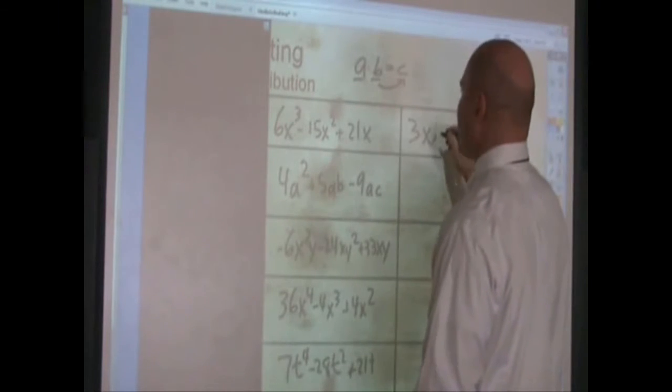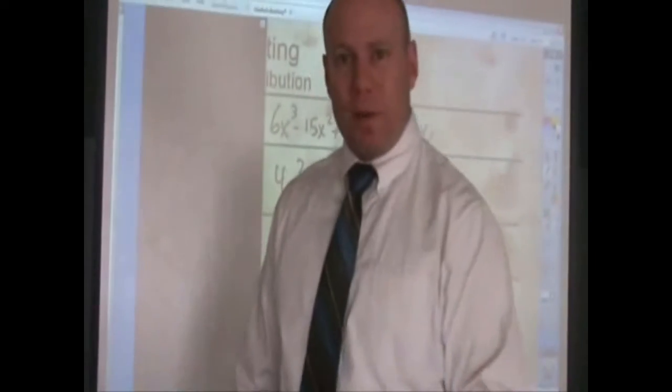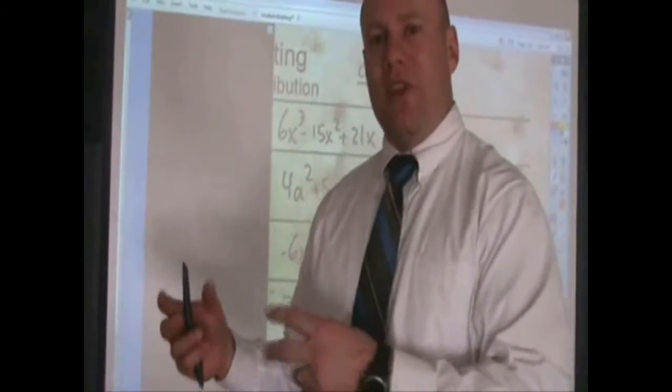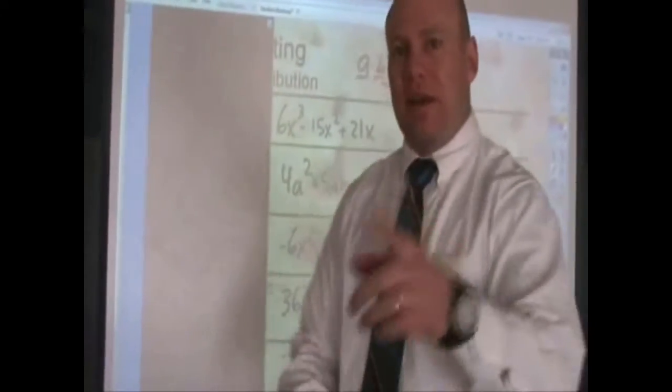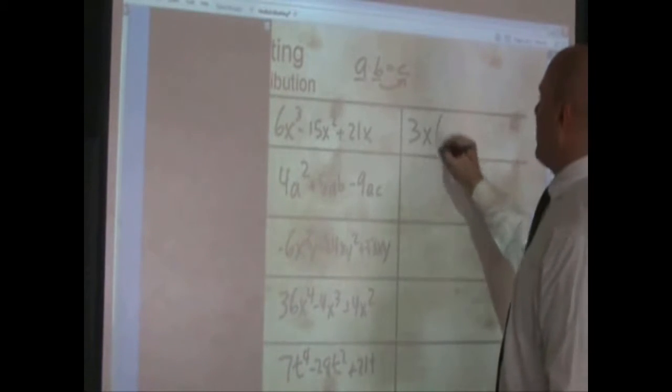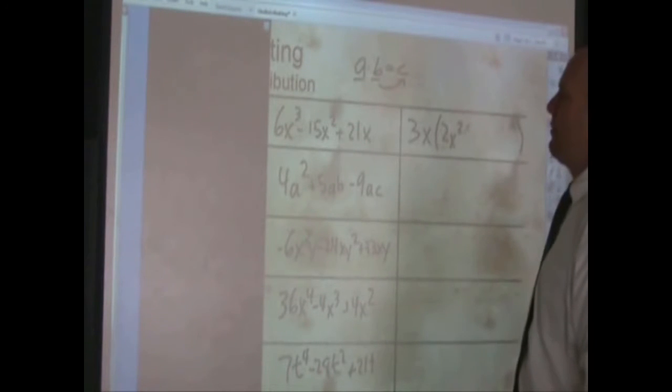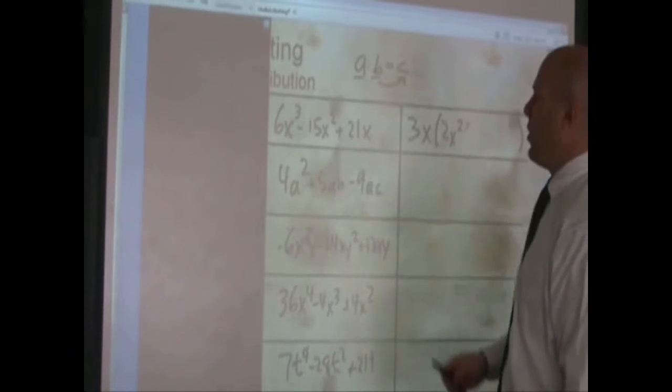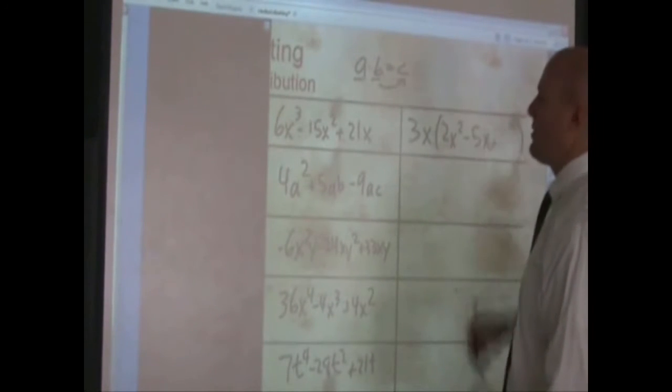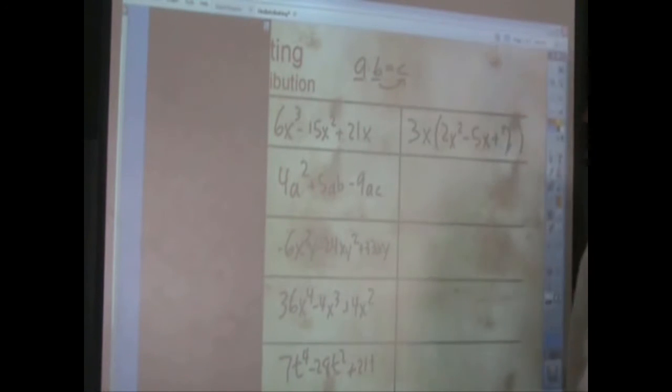So I can factor out a three and an x. So when I factor out a three and x, this is a division process. Distributing was a multiplication process. Now we're doing the same thing. We're dividing each of the terms by the number it is that I'm pulling out. So, six x cubed divided by three x, or when I take the three x out, I'm left with two x squared in its place. Fifteen x squared, when I divide by three x, makes negative five x. And twenty-one x divided by three x is seven.